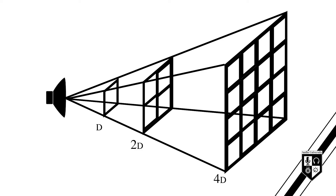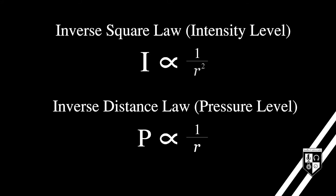The inverse square law helps us calculate the intensity level along the surface area of the wavefront. However, our ears and microphones measure pressure level changes at only a small point along this surface area. To predict sound pressure level changes at a given distance from the source, the inverse distance law is used.